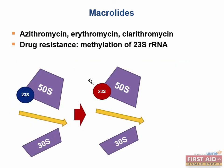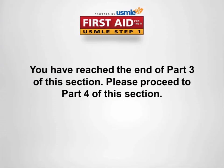Now let's discuss the mechanism of resistance of macrolide antibiotics. These drugs bind to the 23S ribosomal RNA and block translocation of the elongating polypeptide strand. Bacteria become resistant by methylating the 23S RNA subunit, which prevents the macrolide from binding to the 23S ribosomal RNA and therefore allows translocation to continue.